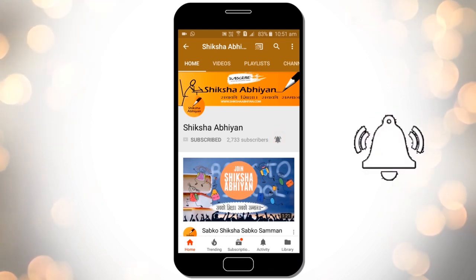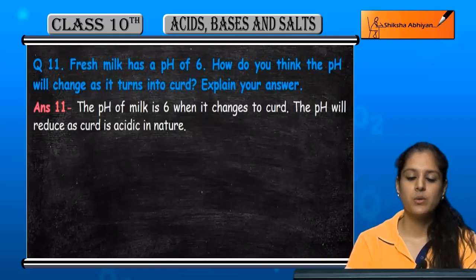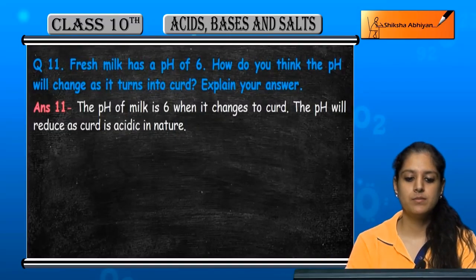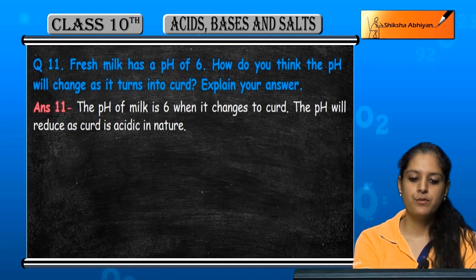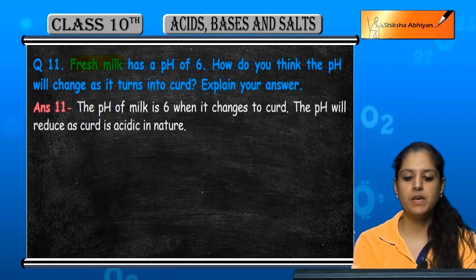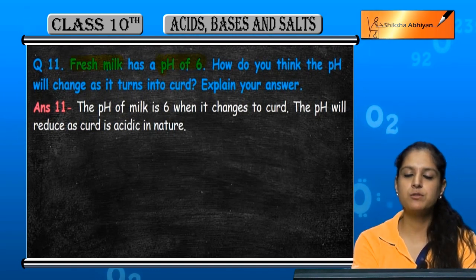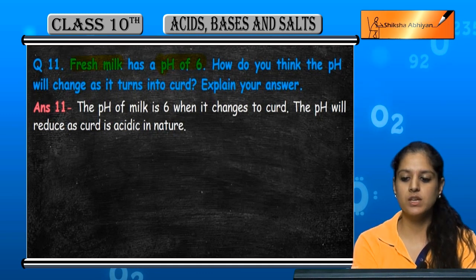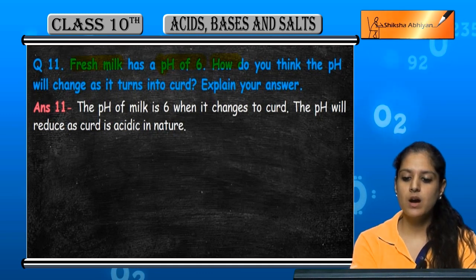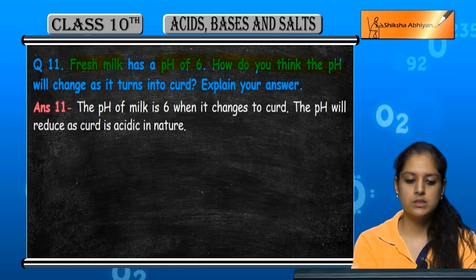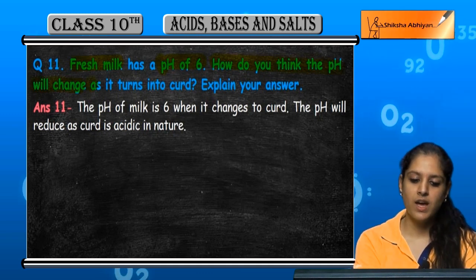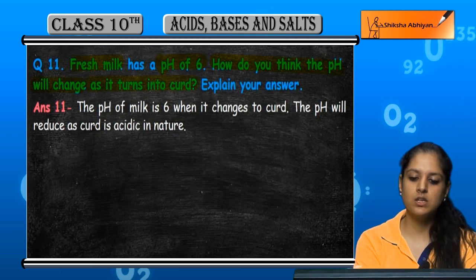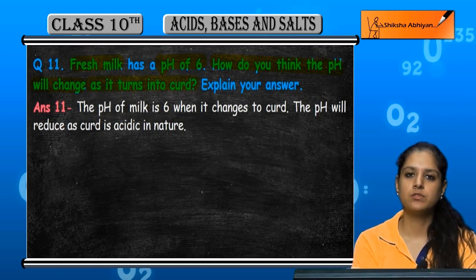Question 11: Fresh milk has a pH of 6. How do you think the pH will change as it turns into curds?